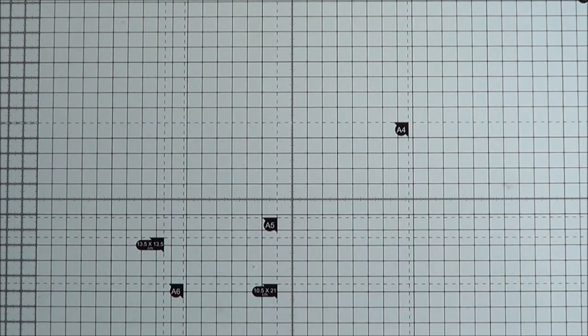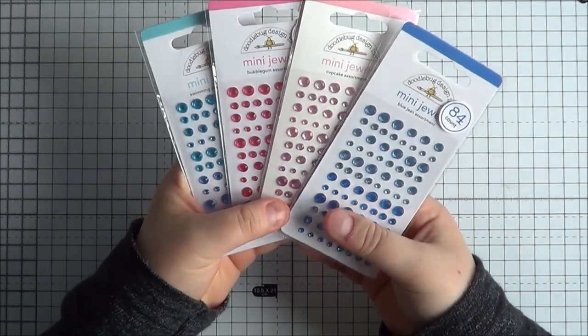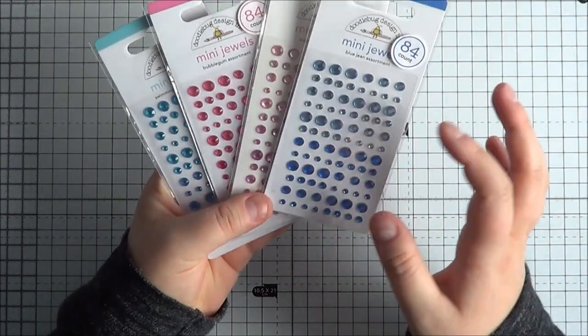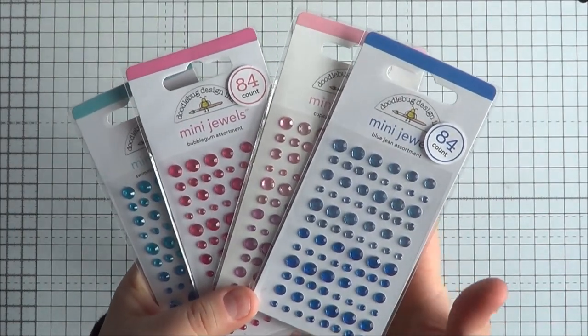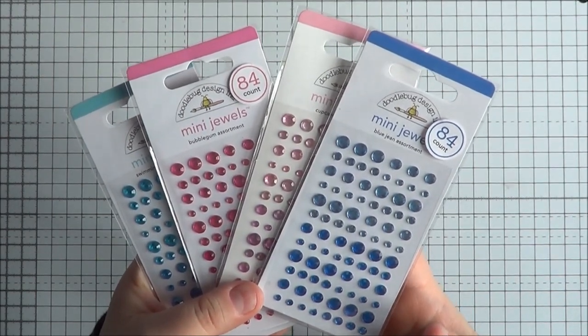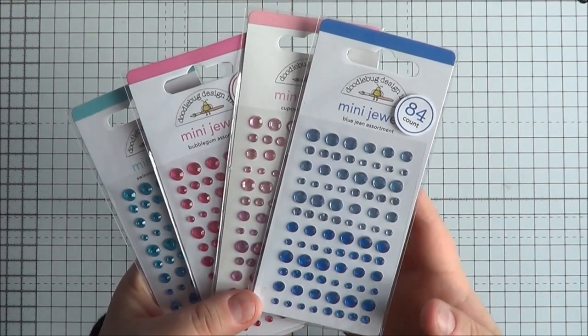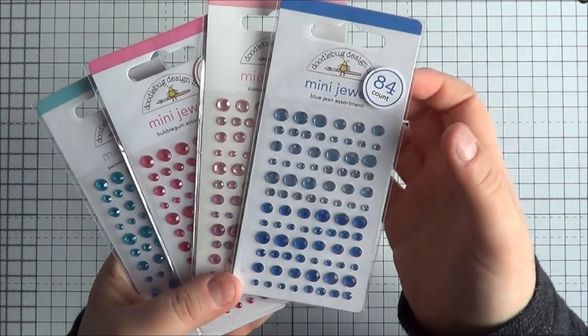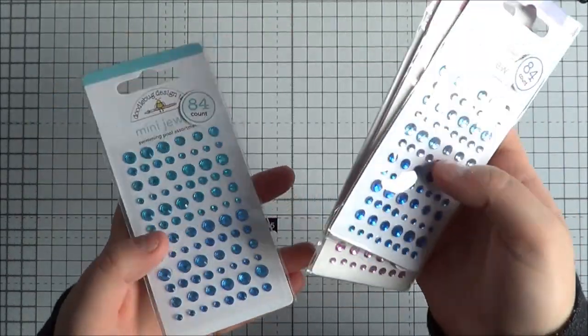So that was from Crafty Charlie. And then from Craft Mojo, I got some of the Doodlebug mini jewels. I did actually get two of each colour but I'm just showing you one. The Doodlebug mini jewels, for some reason, they just don't seem to sell them anymore. But I absolutely love them. Not just because they're Doodlebug but just they're really well made. And obviously I love the colours. And I much prefer the smaller ones than the new larger ones. So I got what Sally had in. So I got the Blue Jean, the Cupcake, the Bubblegum and the Swimming Pool.